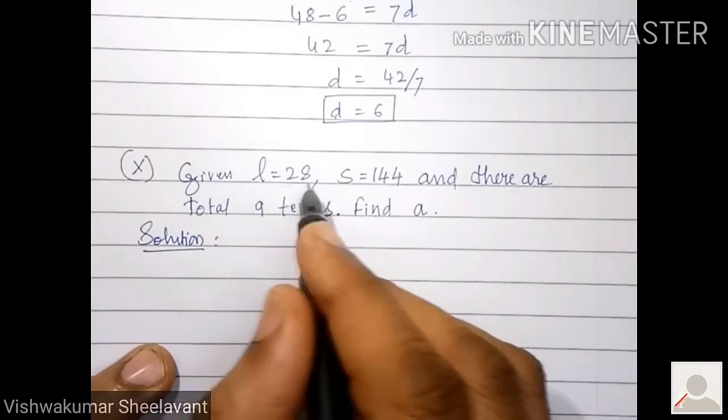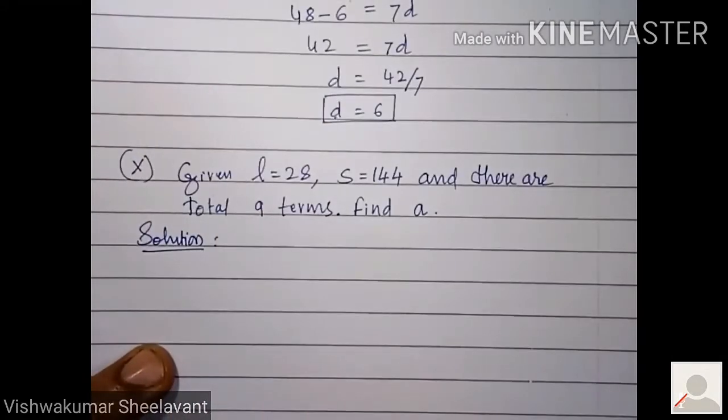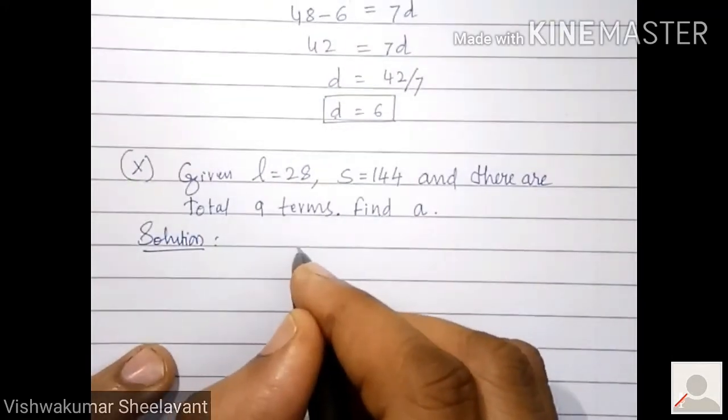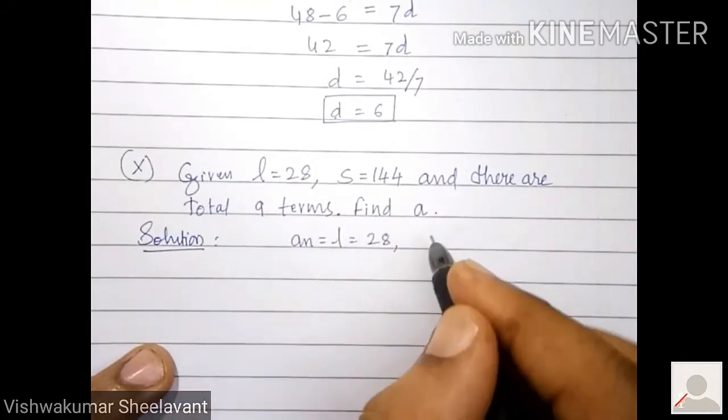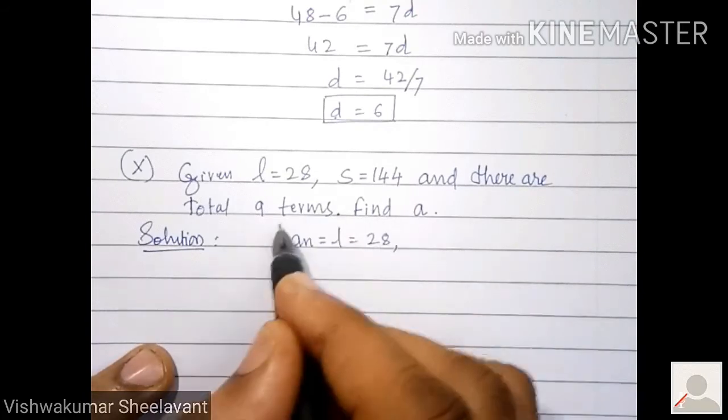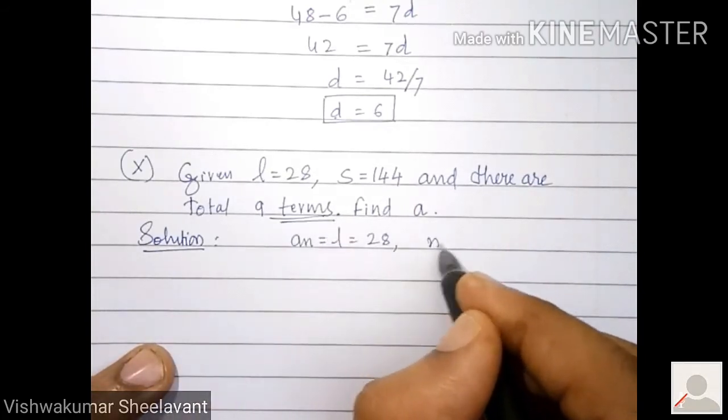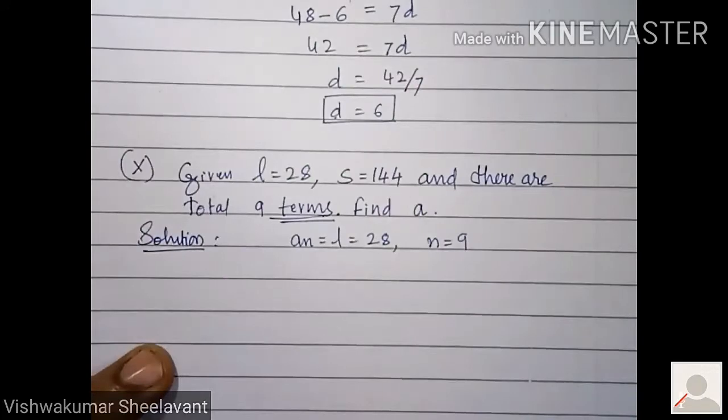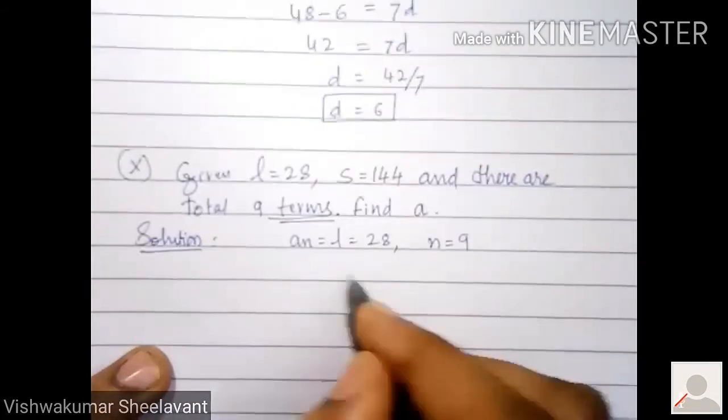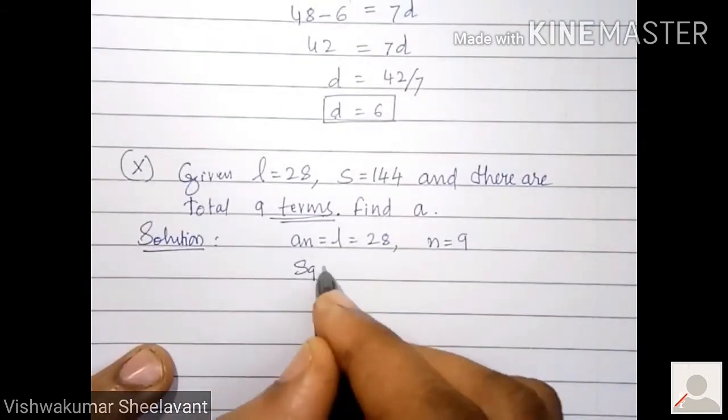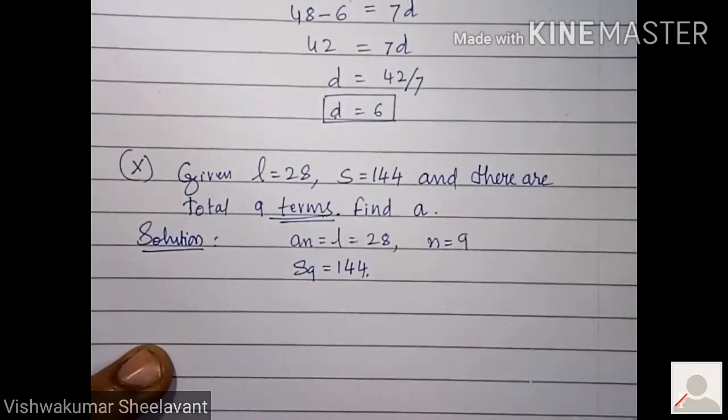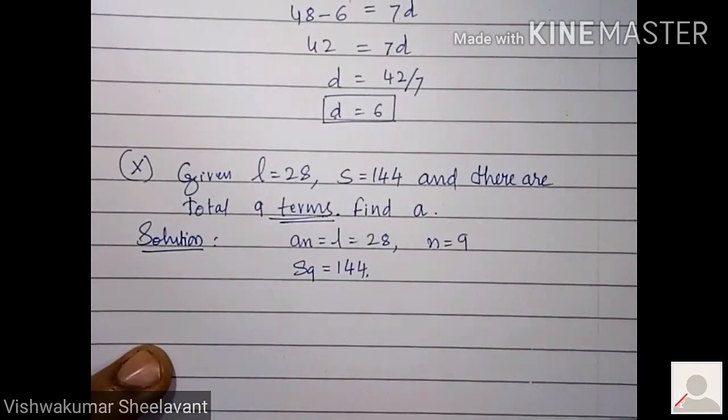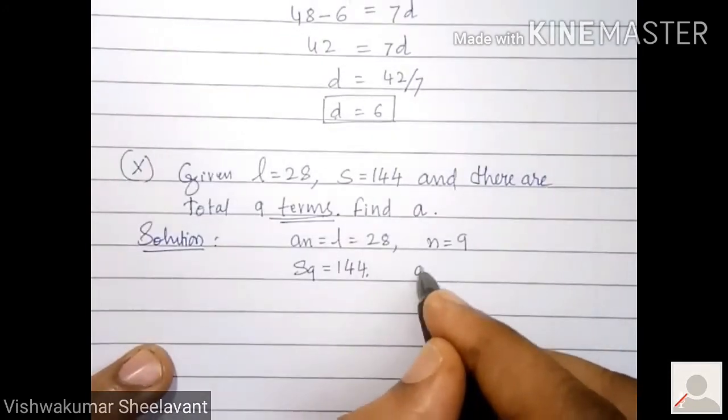There are nine terms means n equals 9. S_9 equals 144. You have to find a equals how much.